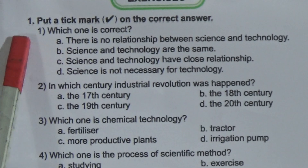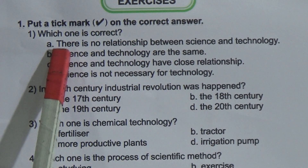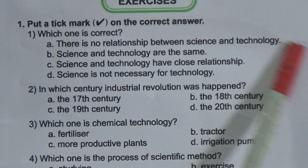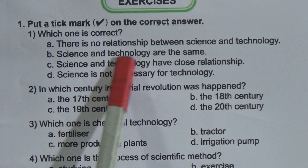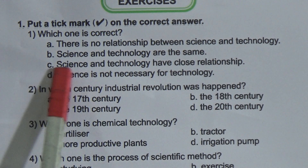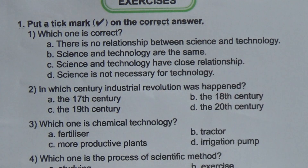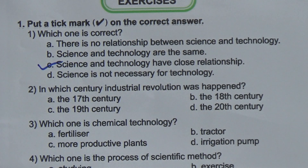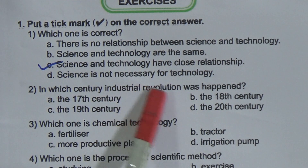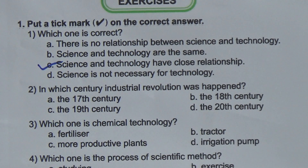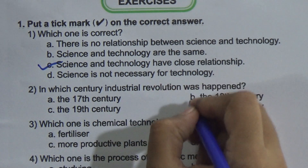Now come to the exercise — put a tick mark on the correct answer. Question 1: Which one is correct? 'There is no relationship between science and technology' — this is incorrect. 'Science and technology are the same' — it is also incorrect. 'Science and technology have a close relationship' — this one is correct. Question 2: In which century did the industrial revolution happen? In the 18th century — the answer will be B.